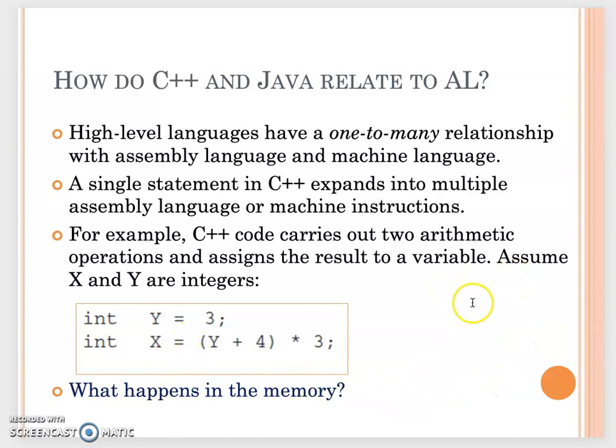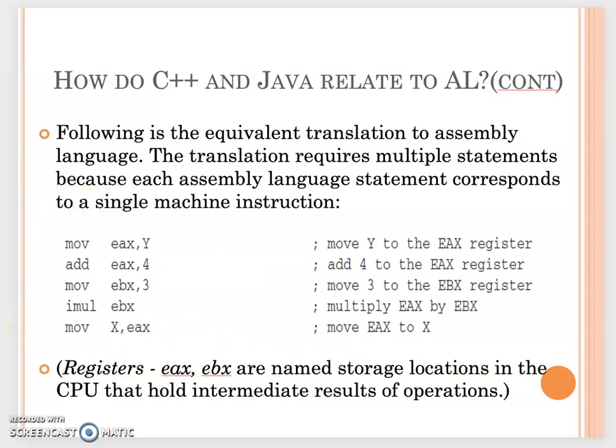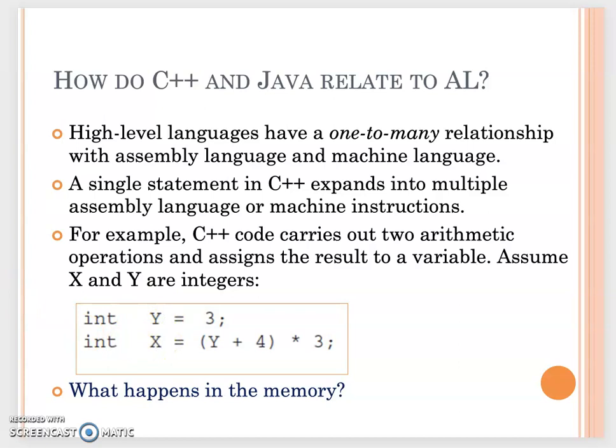What happens in the memory is you will have y as 4 bytes, x as 4 bytes. We assign 3 to the y. When we calculate x, we use the y value to calculate and get 21, then assign it to the 4 bytes in x. These are just two easy statements in C++ or Java. But actually these two statements, now I will show you how they will interpret into assembly language.